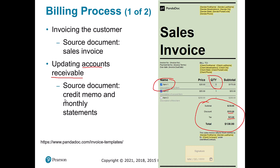Other documents you might see include credit memos. For example, if we ship goods and they're spoiled by the time they're delivered, the customer might say the coffee is expired and they can't sell it. We might send them a credit memo saying we owe them $200 to replace the spoiled inventory rather than having them return it. You may also need to send monthly statements so the customer knows their total balance owed, which is important when you might have hundreds or thousands of sales with a given customer.